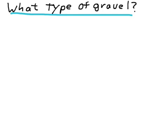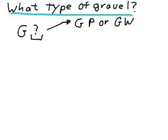It's to determine what type of gravel this is. We know it's a G for gravel, but we don't know what type. There are three possibilities. If the soil has very little fines, very little clay or silt material, then it will be classified either as a GP, a poorly graded gravel, or a GW, a well-graded gravel.